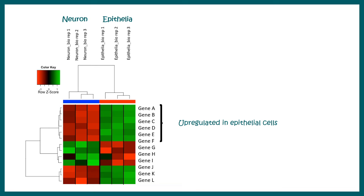Here we can understand from the color key that this particular genes are upregulated in epithelia compared to the neuron, whereas these set of genes are upregulated in neurons compared to epithelia.